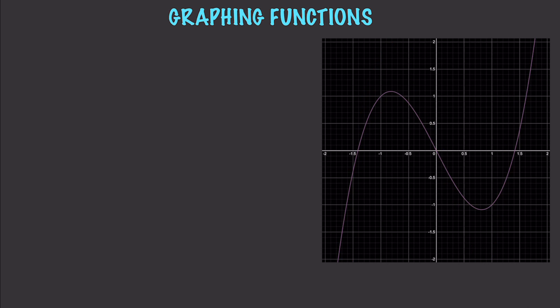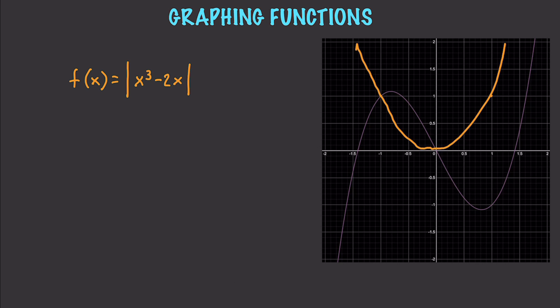Another thing you may come across: if you have the absolute value of your function, this simply converts all y values to positive. Which means you're basically going to have a big U-shape. The origin stays the same and it looks roughly like that.